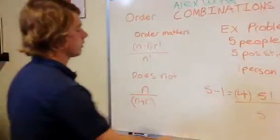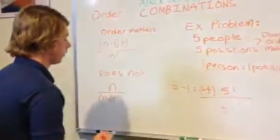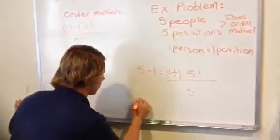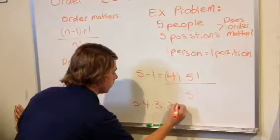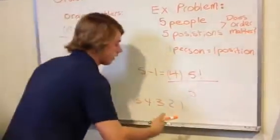The way you would solve this is, now you have to solve for 5 exclamation point. And that is 5, 4, 3, 2, 1. Now, the 1 doesn't matter in this.